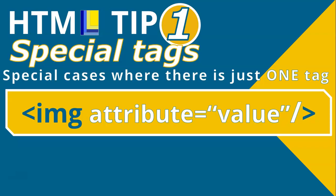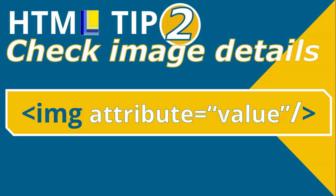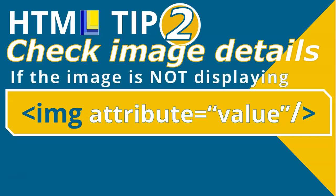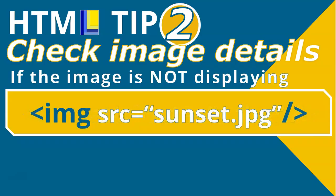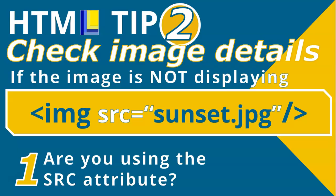Speaking about attributes of the image tag, that brings us to HTML tip number two: checking the image details. A lot of the time in your exam paper, they will give you an image that is not displayed. We need to check the properties of that image tag. There are four checks. The first is to make sure you are using the SRC attribute, or source — an image tag with a source attribute equal to a value.